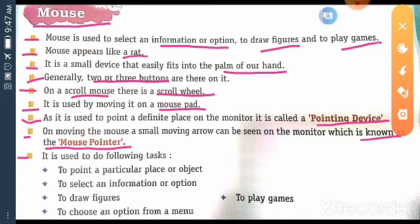Next topic, it is used to do following task. Means, Mouse is used to do following task. Student, this topic is important. So, this all topic are done in your notebook. It means you have to write all 5 topics in your computer notebook.